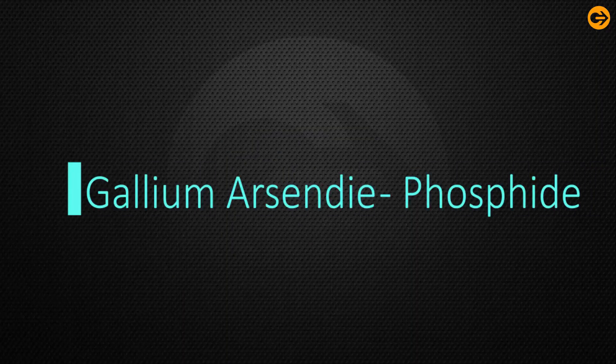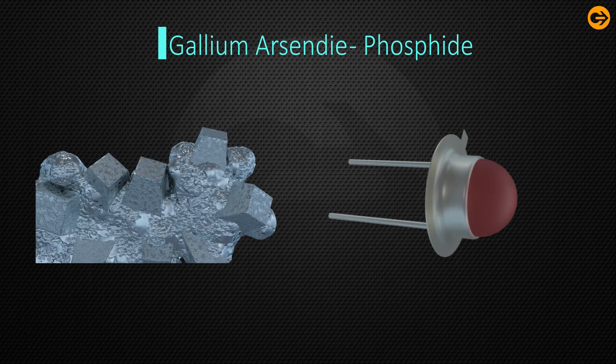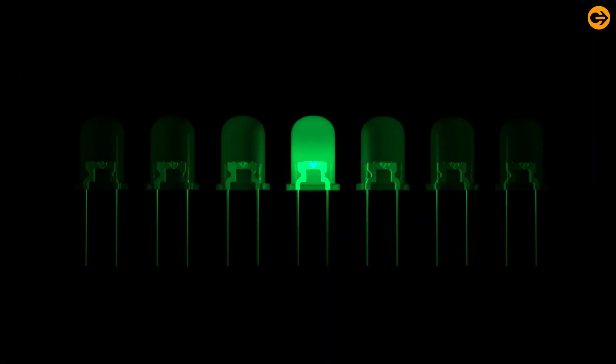Gallium arsenide phosphoride is used for producing LEDs that emit red or yellow light. LEDs are also available in multiple colors.